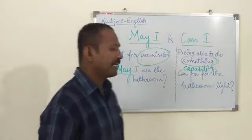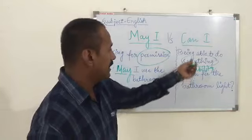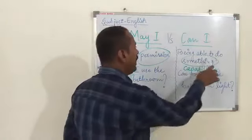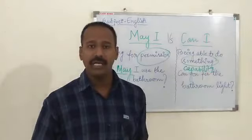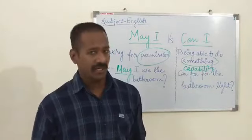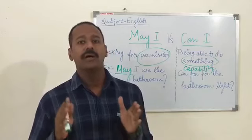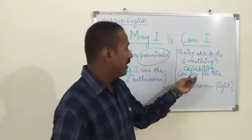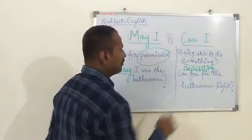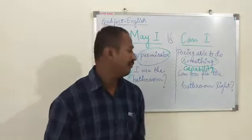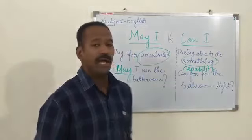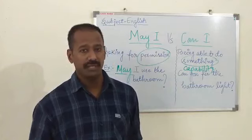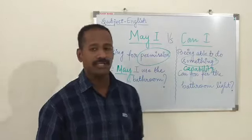Let's move to another example. 'Can' is generally used for being able to do something — capability, possibility. 'Can' denotes action and 'may' denotes permission. Next example: 'Can you fix the bathroom light?' It is not possible for everyone to do everything.